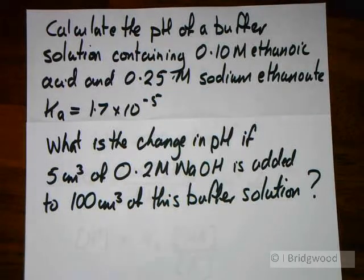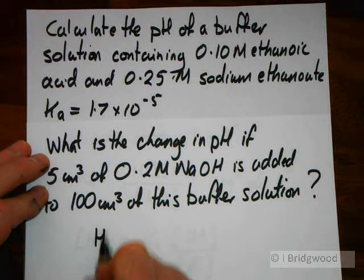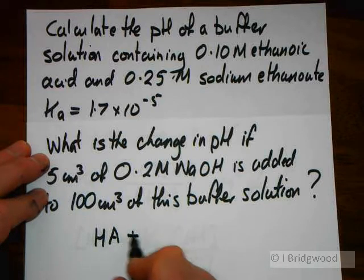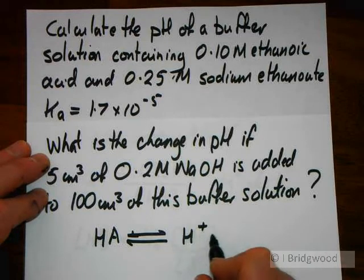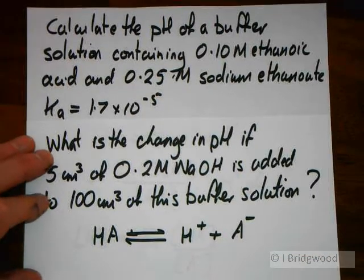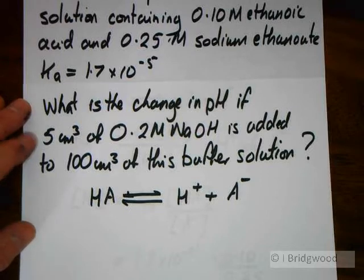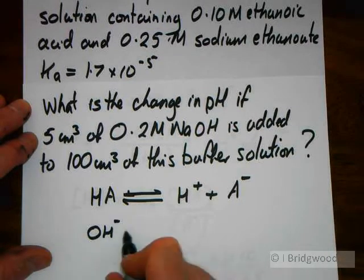So what happens in this case? What we have is our equilibrium, HA equilibrium with H⁺ + A⁻. But we also have sodium hydroxide here reacting. So the hydroxide ions are going to react with the acid.